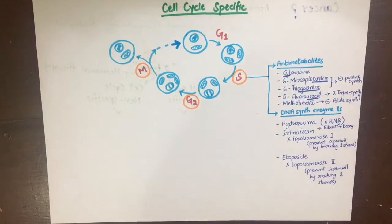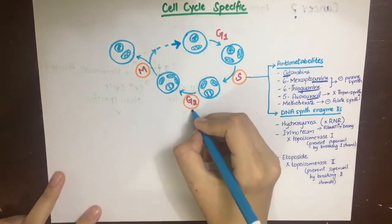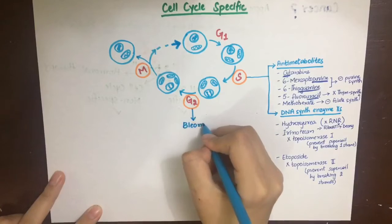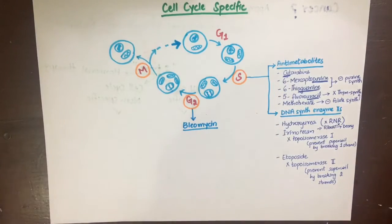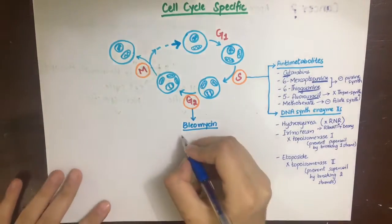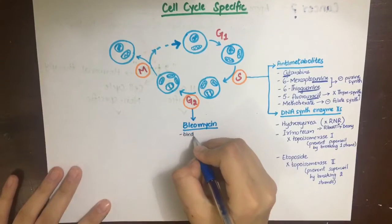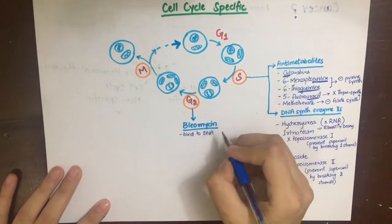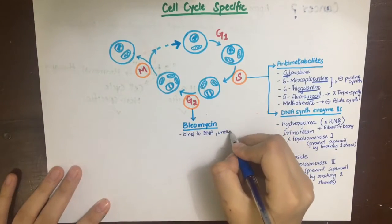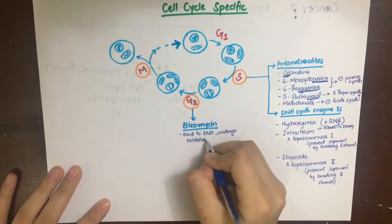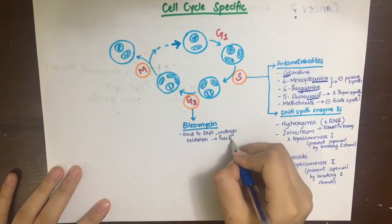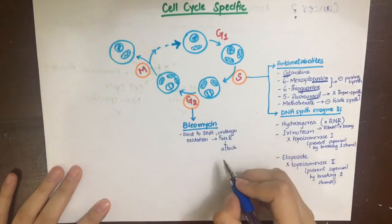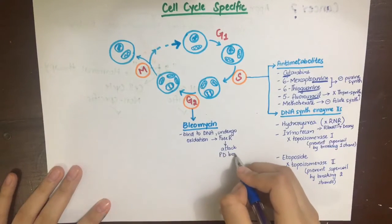The antibiotic that acts on the G2 phase of the cell cycle is bleomycin. Its mechanism of action involves binding to DNA and undergoing oxidation, producing free radicals. These free radicals attack the phosphodiester bonds of the DNA, leading to strand breakage.